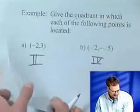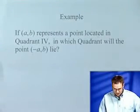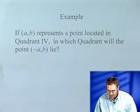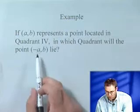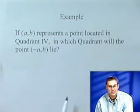All right, let's do one last example. Here's a nice little example: let's say the point (a, b) is a point located in quadrant IV. We want to figure out in which quadrant will the point (-a, b) lie.